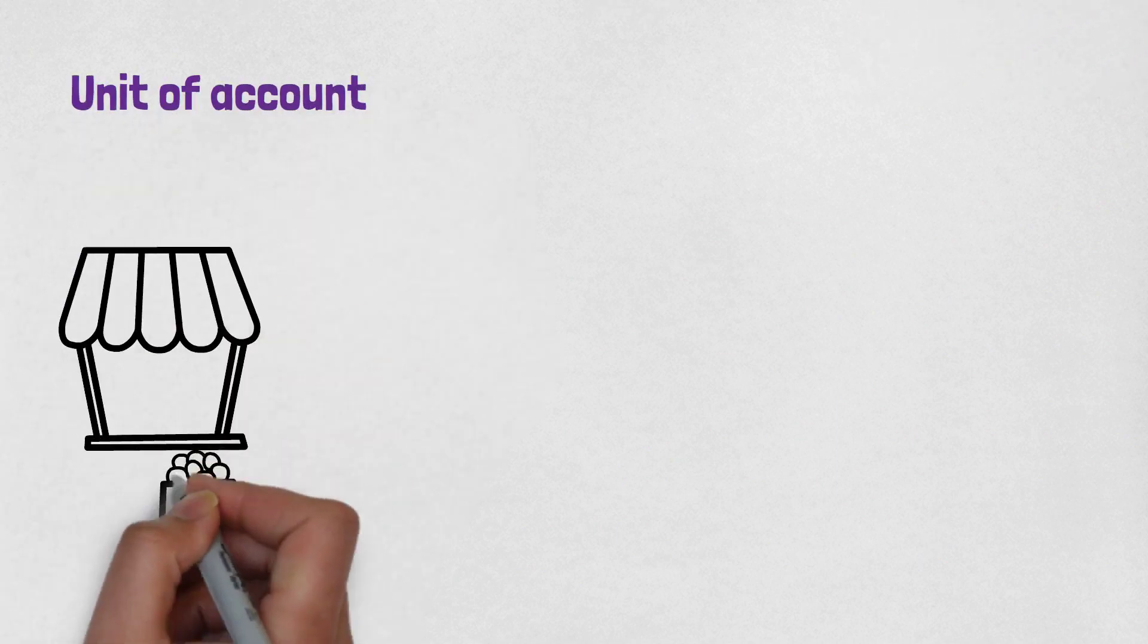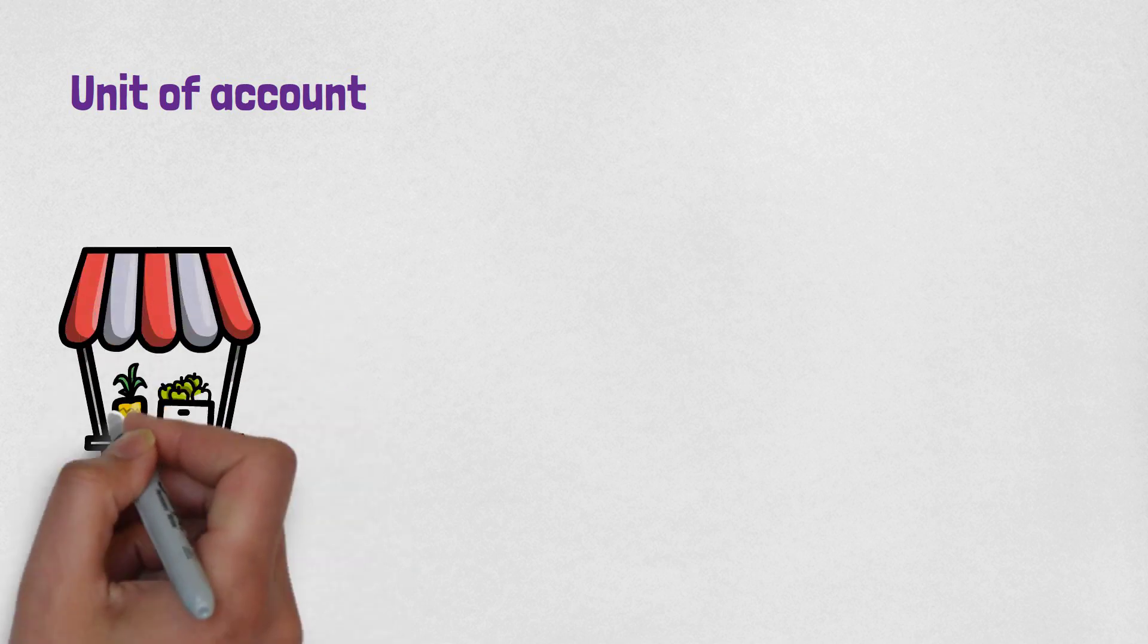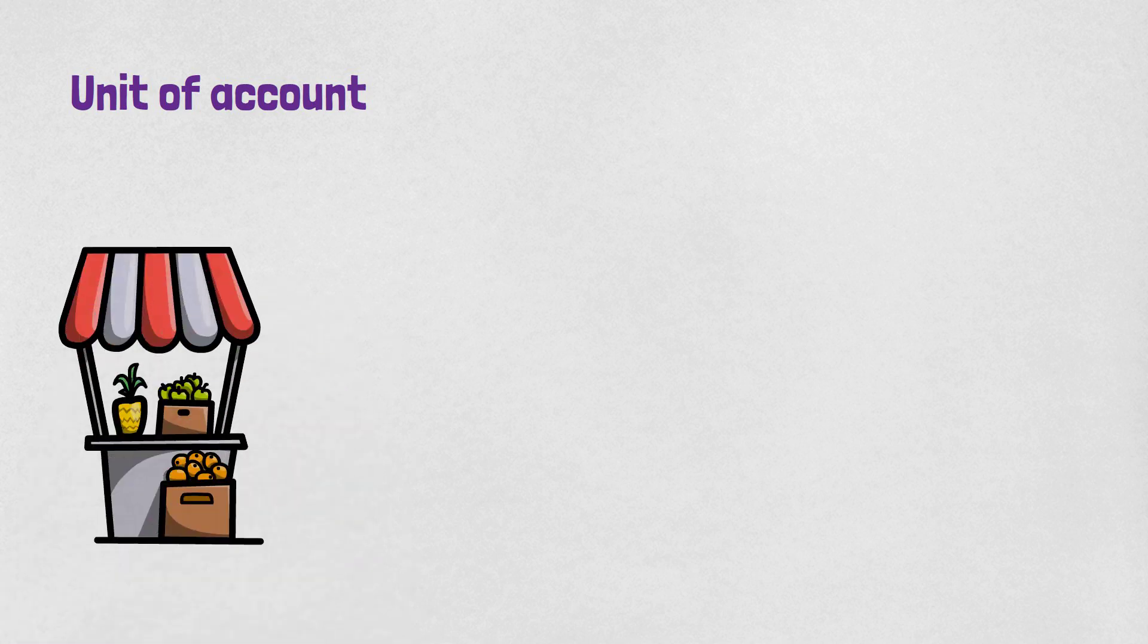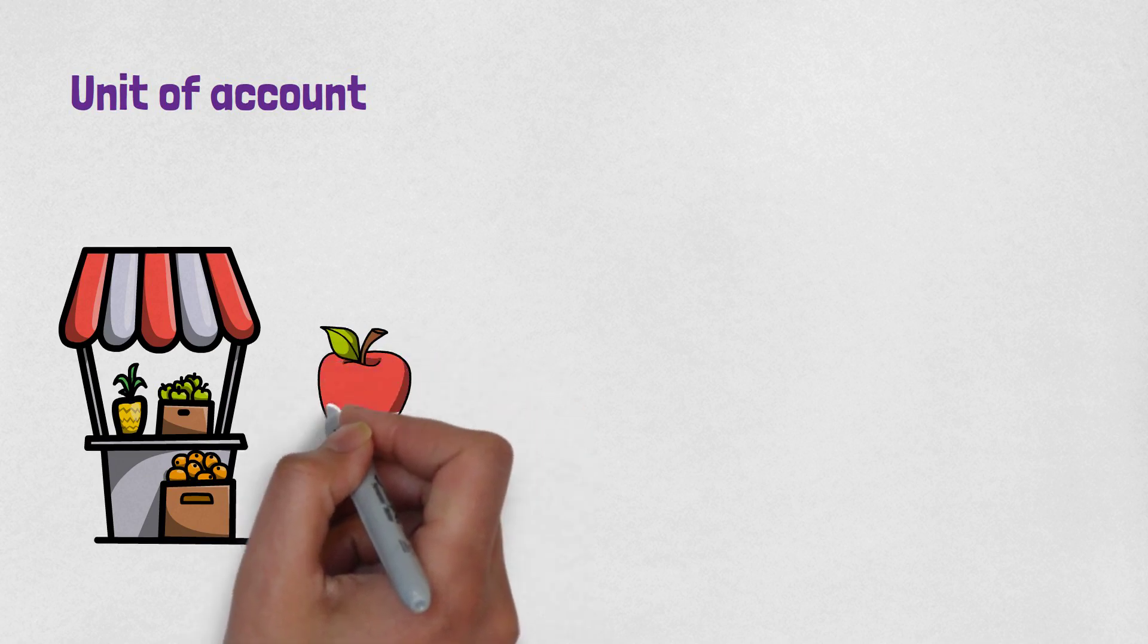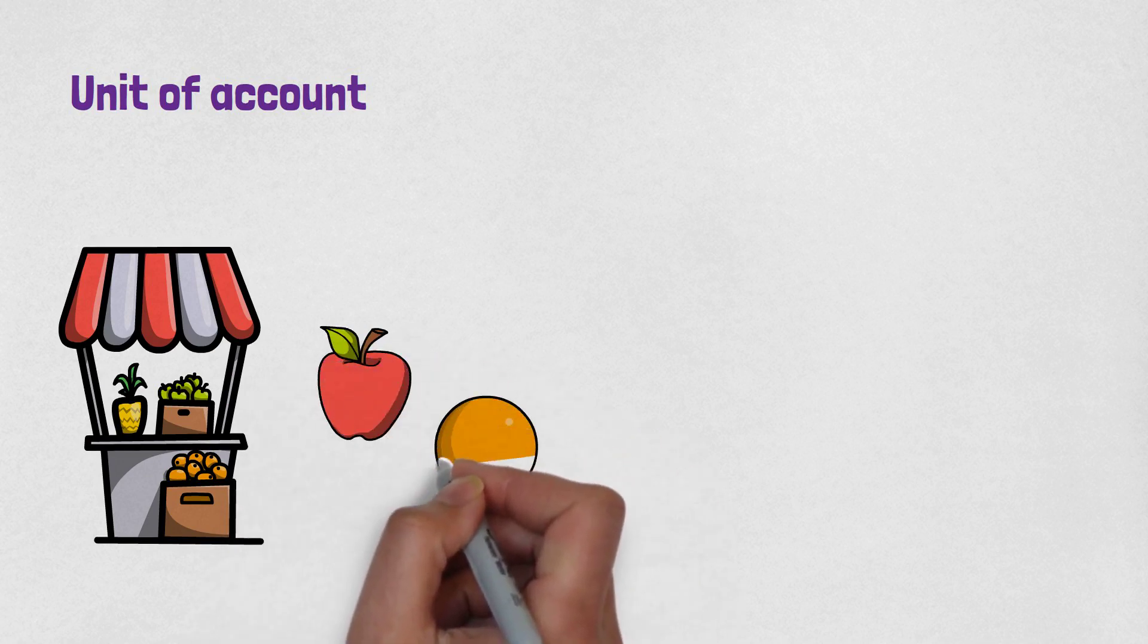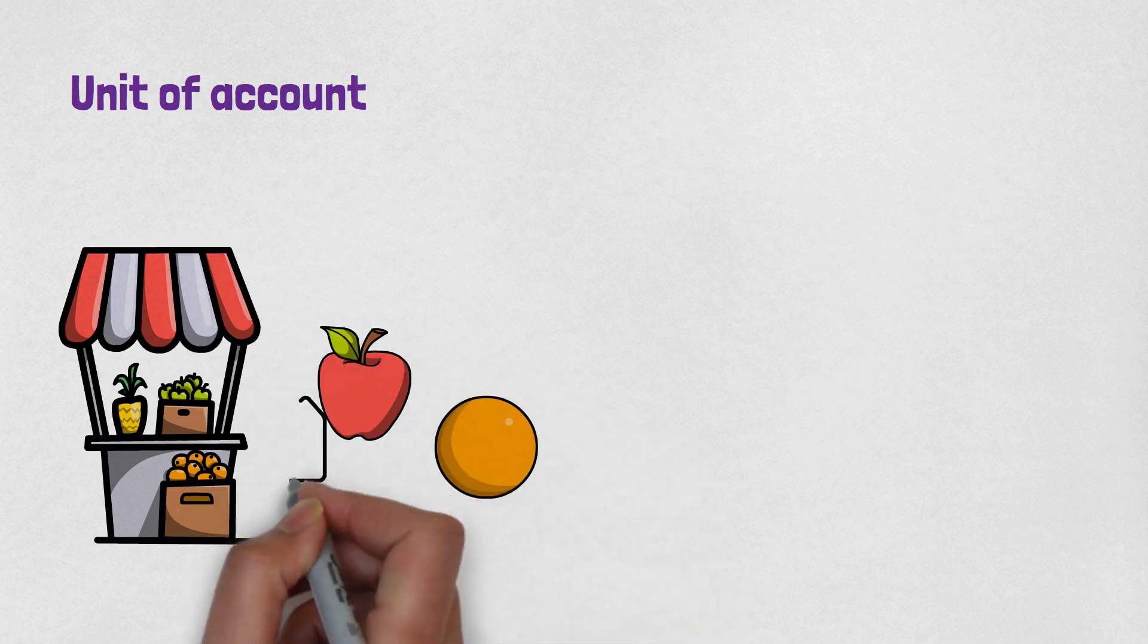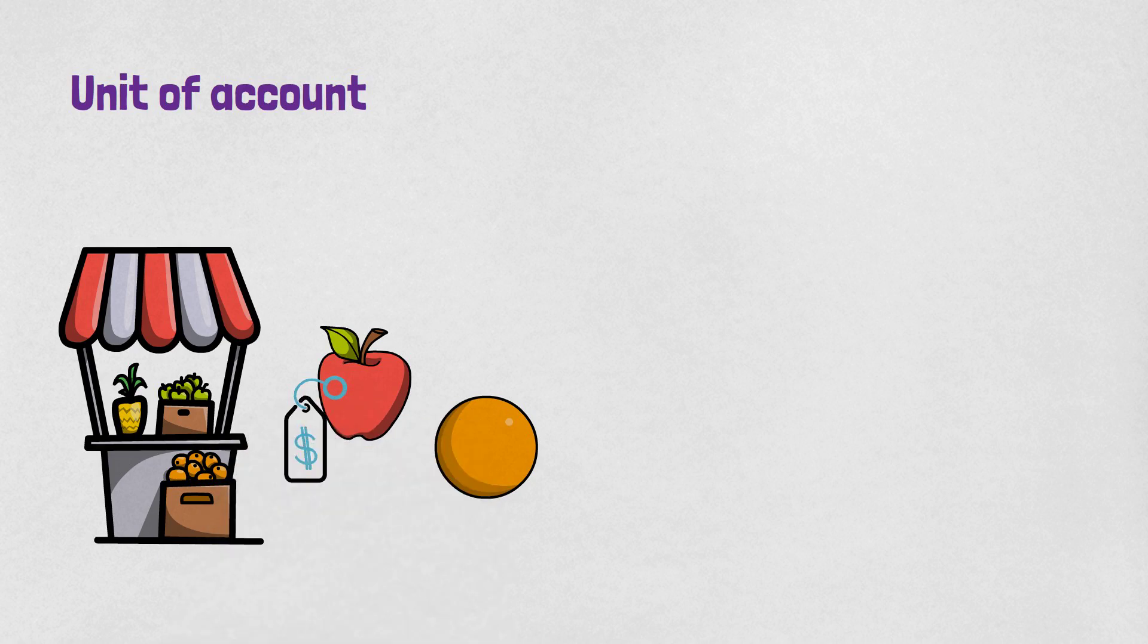And the last function of money is unit of account. Unit of account is the measurement of the market value of goods, services and other transactions. It means that the money needs to have a standard way of pricing things. Back to our original example of apples and oranges, that would mean that we can measure how much an apple or an orange is worth.